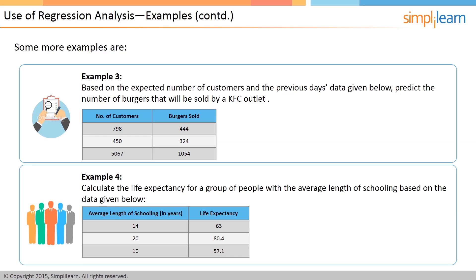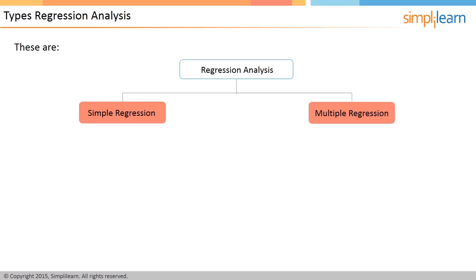In example three, based on the expected number of customers and the previous day's data given, you need to predict the number of burgers that will be sold by a KFC outlet. In example four, you have to calculate the life expectancy for a group of people with the average length of schooling, based on the data given.